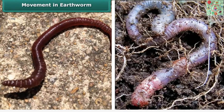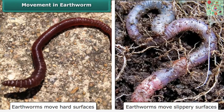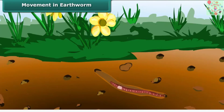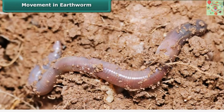Let's see the movement in earthworms. Earthworms move easily on hard and slippery surfaces. They have tiny, stiff, hair-like projections called bristles on their body. They grab the soil with the help of these bristles. Earthworms first stretch and contract their muscles to move, covering only a small distance with every move.